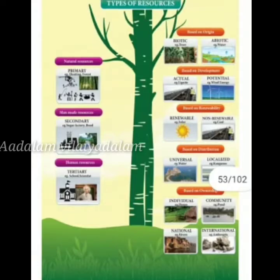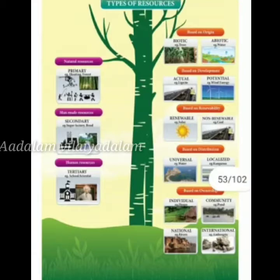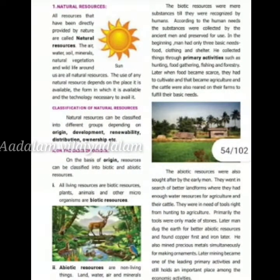Actual resources are resources that are currently being used and whose quantity is known. Potential resources are resources that are not being used at present, and whose full quantity and location have not yet been determined — the technology to extract such resources is also yet to be developed. For example, marine resources found in the Bay of Bengal and the Arabian Sea.